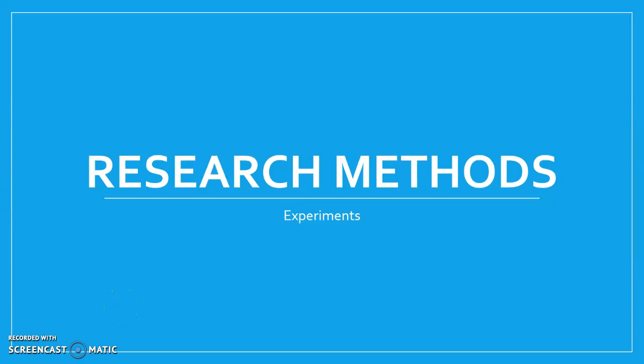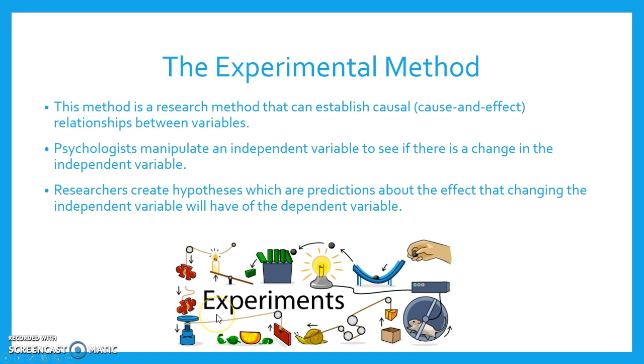Today we're going to have a look at research methods, and in particular we're going to look at experiments — the experimental method. This method is a research method that can establish causal, cause and effect relationships between variables.